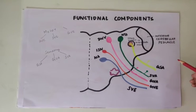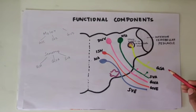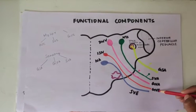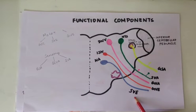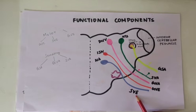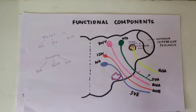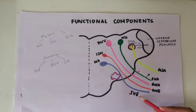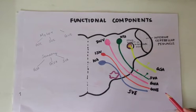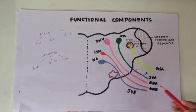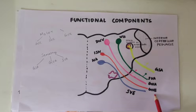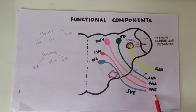Specifically for the glossopharyngeal nerve, there are five components: GSA, SVA, GVA, GVE, and SVE. Starting with SVE — special visceral efferent — arising from the nucleus ambiguus, it supplies the stylopharyngeus muscle as the only motor component. GVE — general visceral efferent — arises from the inferior salivatory nucleus and supplies secretomotor fibers to the parotid gland as preganglionic parasympathetic fibers.